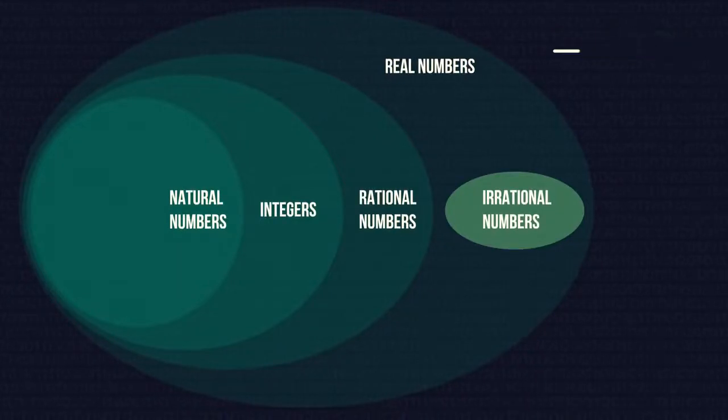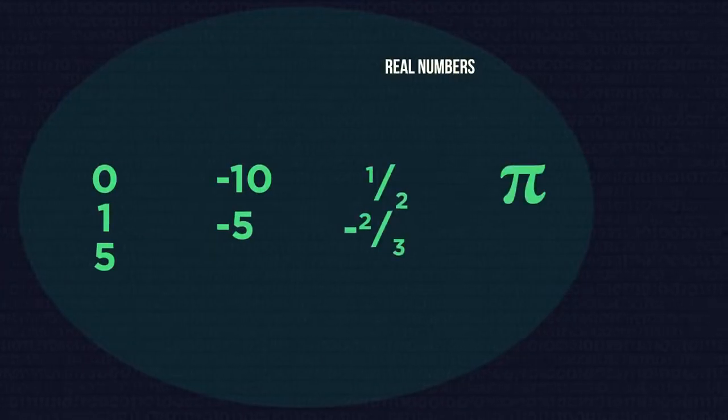Let's start at the top with real numbers. They can be positive, negative, zero, decimals, fractions, pi. Nearly any number you can think of is a real number.